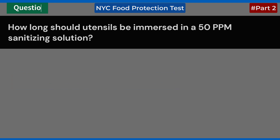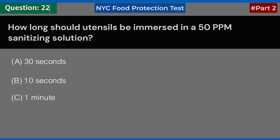How long should utensils be immersed in a 50 ppm sanitizing solution? A. 30 seconds. B. 10 seconds. C. 1 minute. D. 2 minutes. Answer: C. 1 minute.